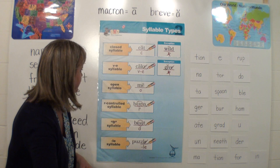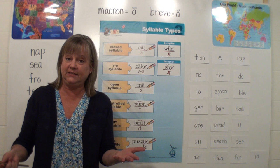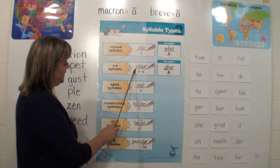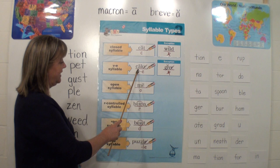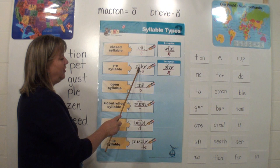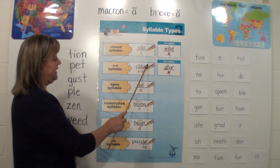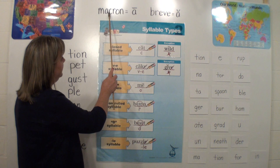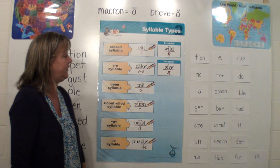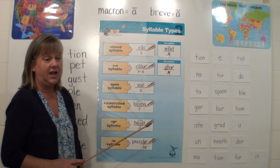The next syllable type is the vowel-consonant-silent E. You learn this as magic E words or silent E words — you've learned those since the end of kindergarten. The example they give us here is "cake." You can see we have an A, a consonant, and a silent E. The E at the end does not say anything, but it has a job to do: the E at the end makes the first vowel long. The E has a slash through it, which means it's silent, and the A has a macron above it, which means it's long A.